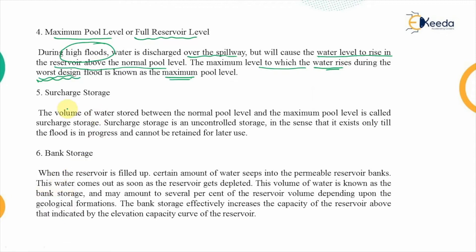The next term is surcharge storage. The volume of water stored between the normal pool level and the maximum pool level is known as surcharge storage. It is an uncontrolled storage because it exists only during floods and cannot be retained — the structure is designed for the maximum condition, but this extra water is beyond normal operating conditions and cannot be held back.